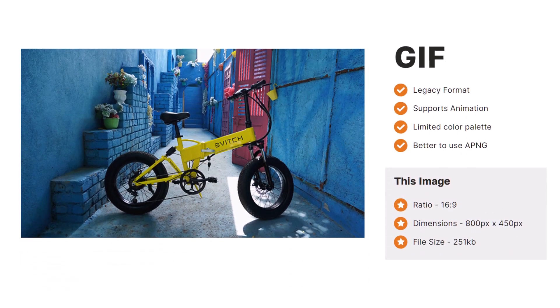GIFs — or GIFs if you prefer — are a bit of a legacy format these days, primarily used because of their support for animation. It is a lossless compression format but it's limited to 256 colors, as opposed to the 16 million of a JPEG. If you are wanting a modern format that supports animation, consider the APNG or AVIF formats.